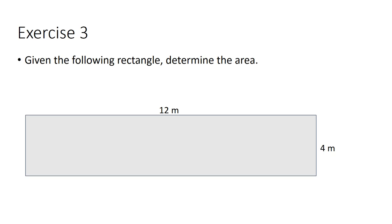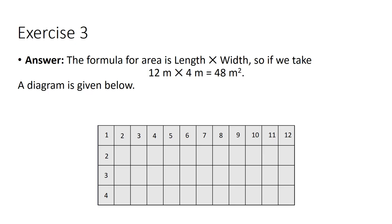Given the following rectangle, determine the area. Both dimensions are provided. Applying the formula: 12 meters times 4 meters equals 48 square meters. A diagram is provided below using this formula method rather than counting them all up.